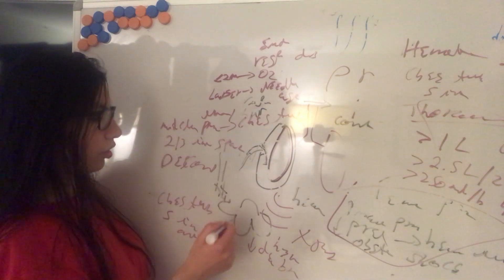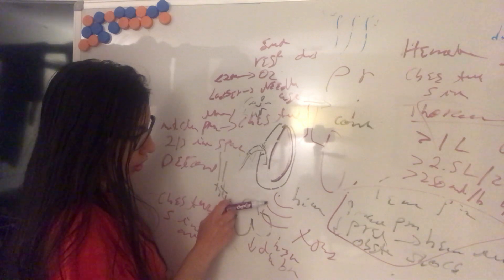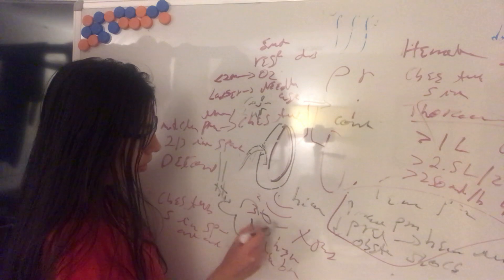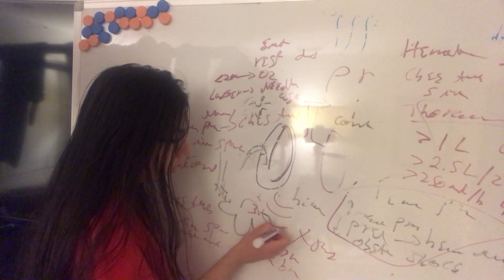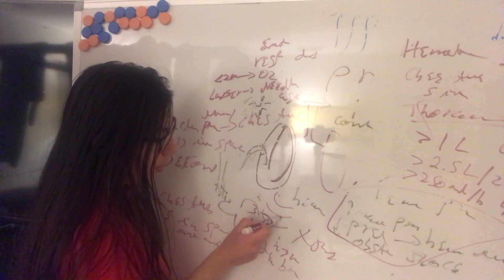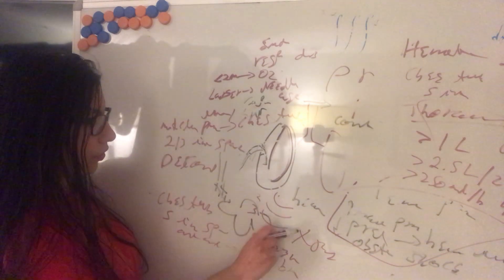We do it between the 2nd and 3rd ribs. So we are in the 2nd intercostal space, but we will do it above the 3rd rib to avoid damaging the arteries, veins and nerves that pass on the inferior border of the rib.